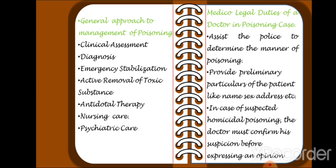Active removal of toxic substances involves decontamination of the exposed parts such as eyes, skin, and ears by washing them with water. Gut decontamination of the GIT is to be done by gastric lavage or administration of activated charcoal. If the poison was ingested through the mouth, gastric lavage should be done; if the eyes, ears, or skin are exposed, they should be cleaned off. These are known as active removal of toxic substances.